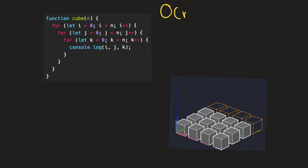To understand O of n cubed, let's take a function into consideration. This cube function takes in an argument n, which is a number, and it's going to iterate through a for loop. For every iteration of this top-level for loop, it's going to iterate through the entirety of a nested for loop, and for every iteration of that, we will need to iterate through the entirety of yet another for loop.